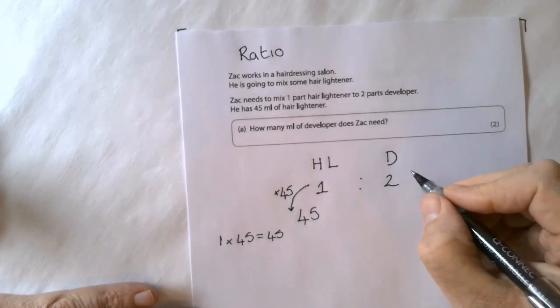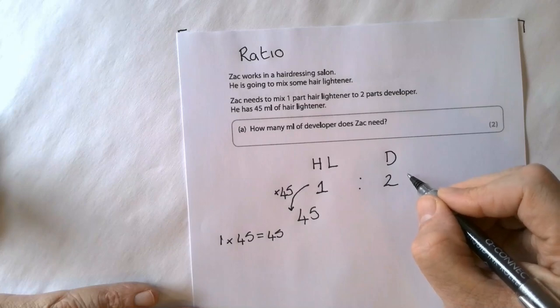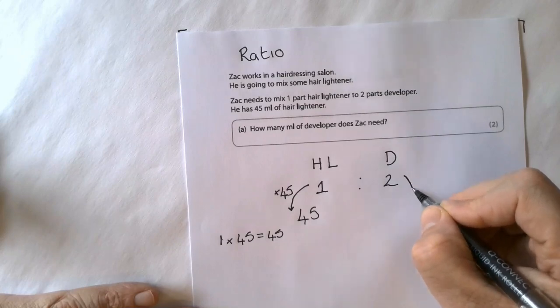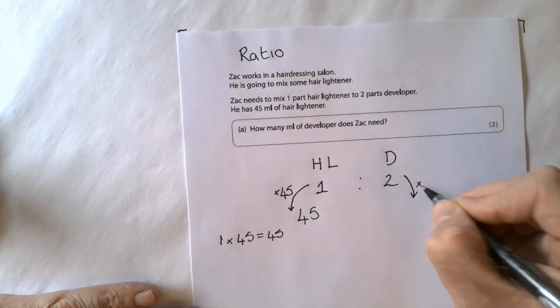On the developer side, you still need to multiply it by the same number. So you would multiply 2 by 45.